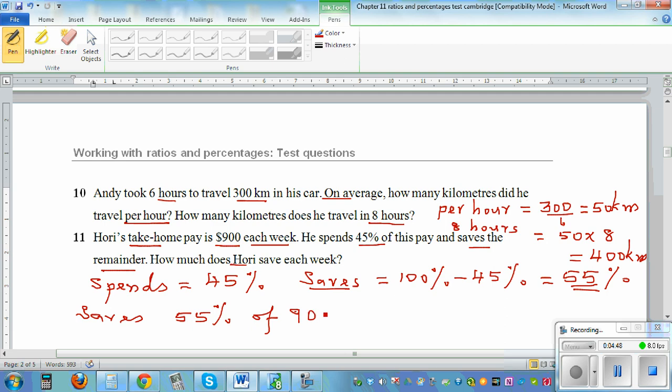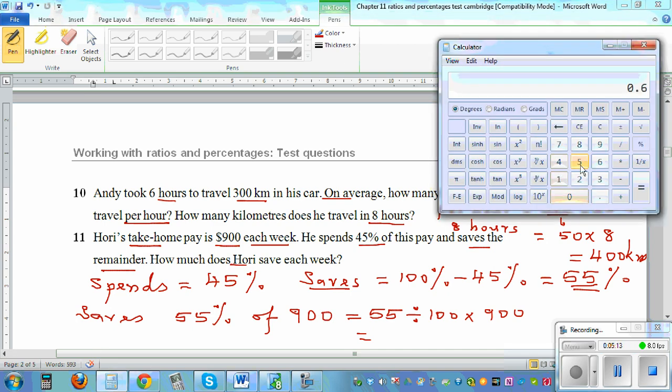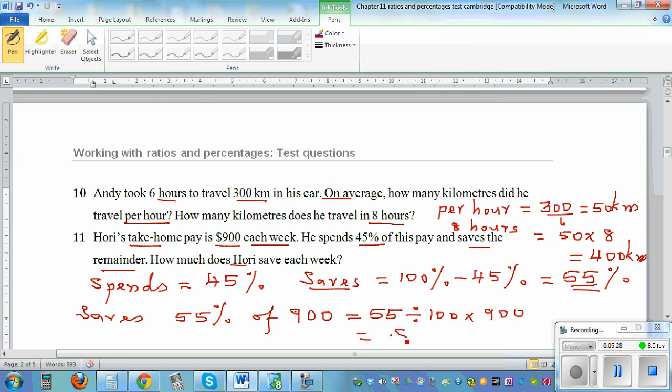His take home pay is 900. So 55% is 55 out of 100. You can use your calculator: 55 out of 100, or divided by 100, times 900. You can estimate - it will be half. 50% is half, so the answer should be greater than 450. So this is 55 out of 100, which if you want to write as a decimal is 0.55 times 900. The answer should be greater than 450, so it's 495. So the answer is he's saving 495 dollars.